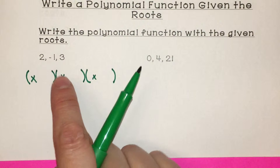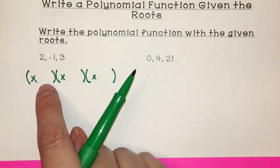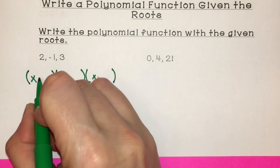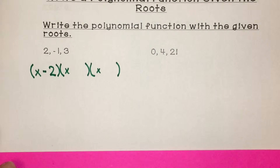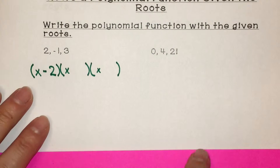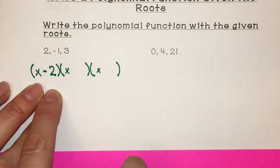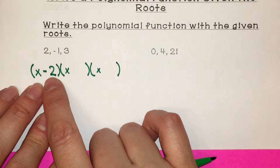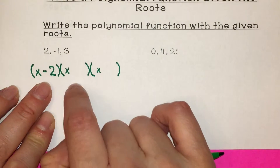To get 2 back over to the same side as x, you would subtract 2 on both sides, which means it was originally x minus 2. When we set that equal to 0, you add 2 to both sides and get x equals positive 2. That's how you found the root.